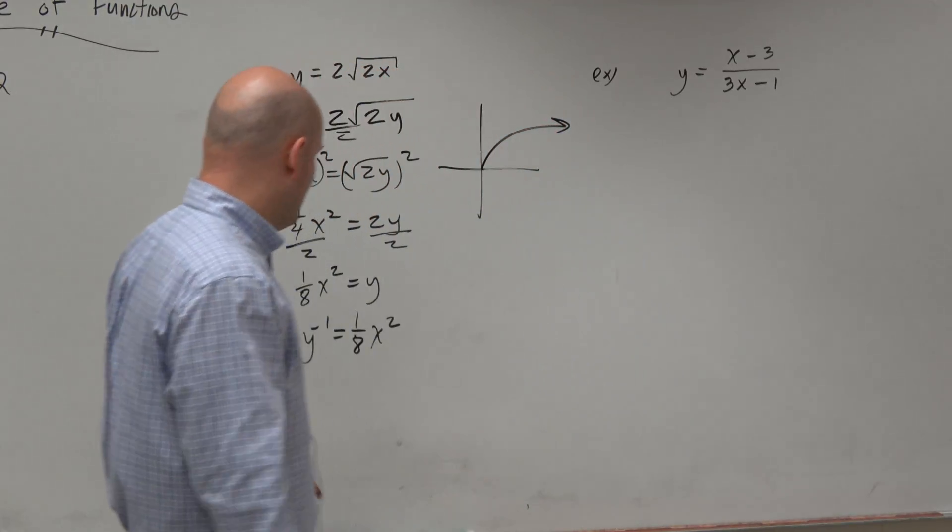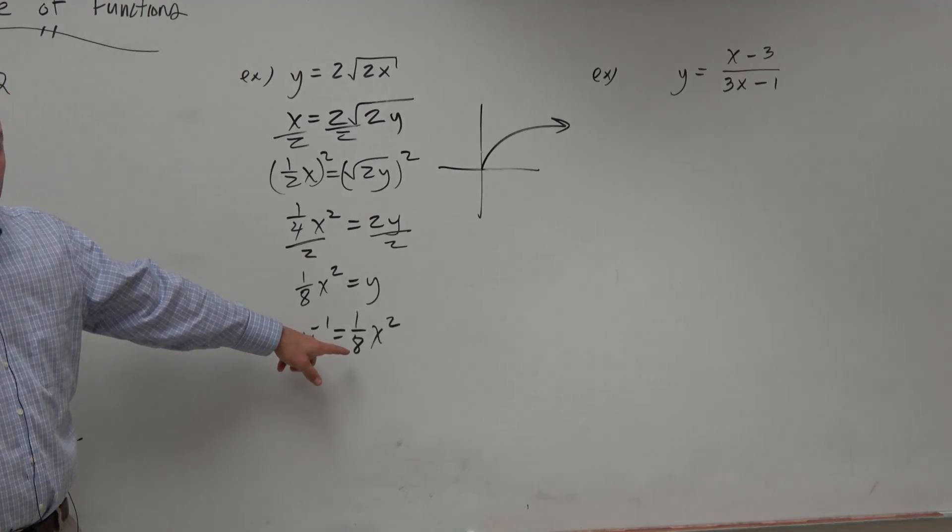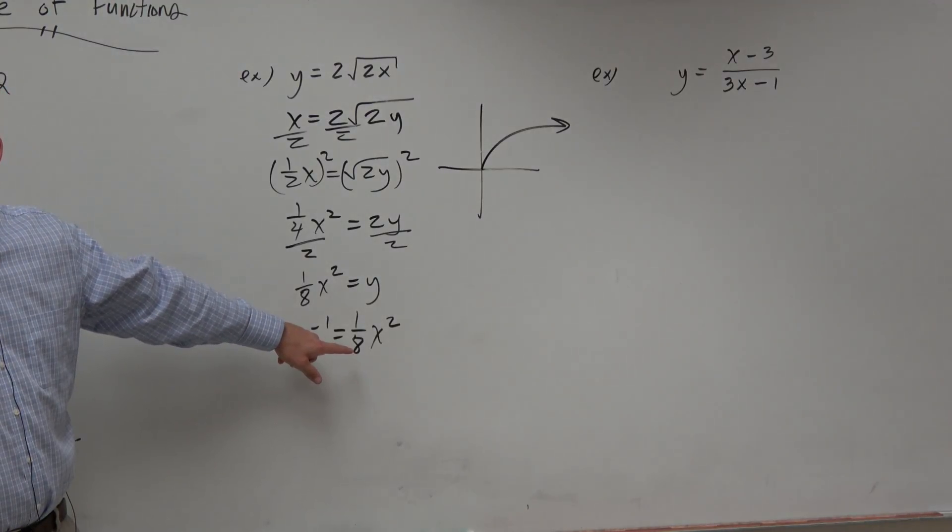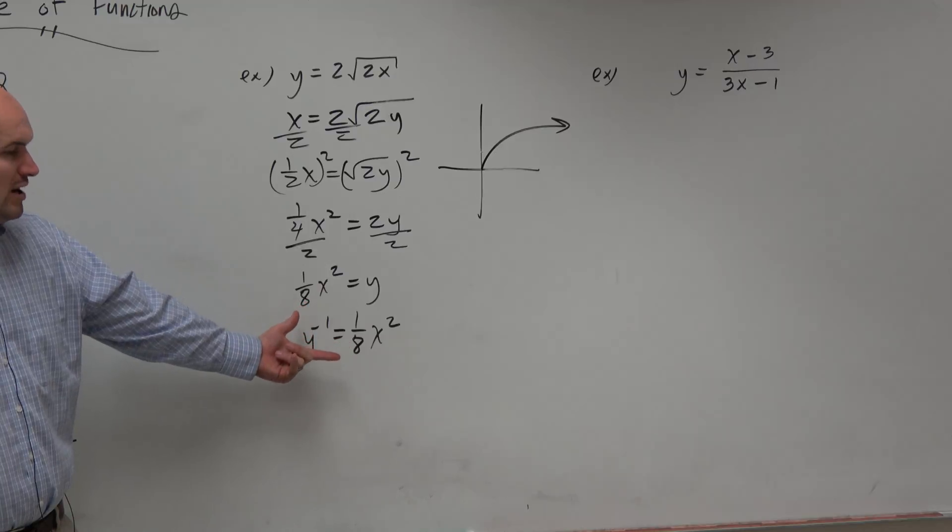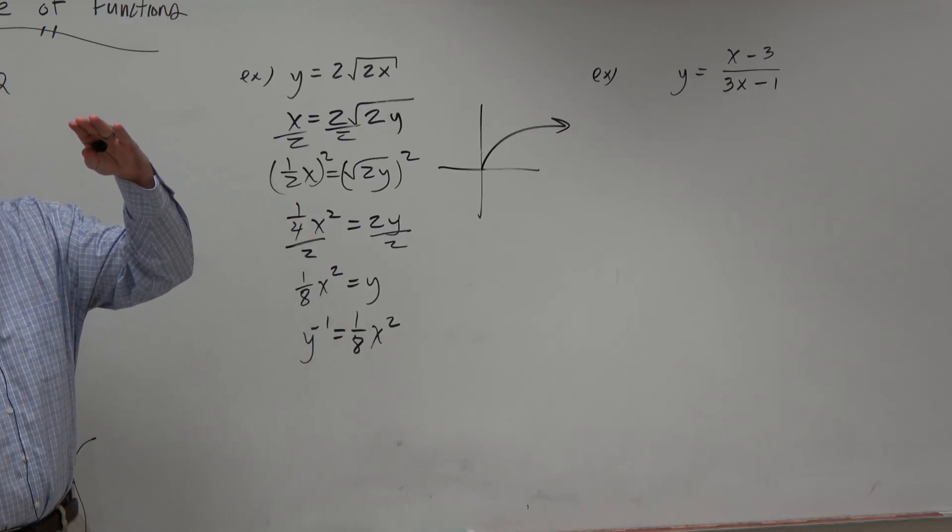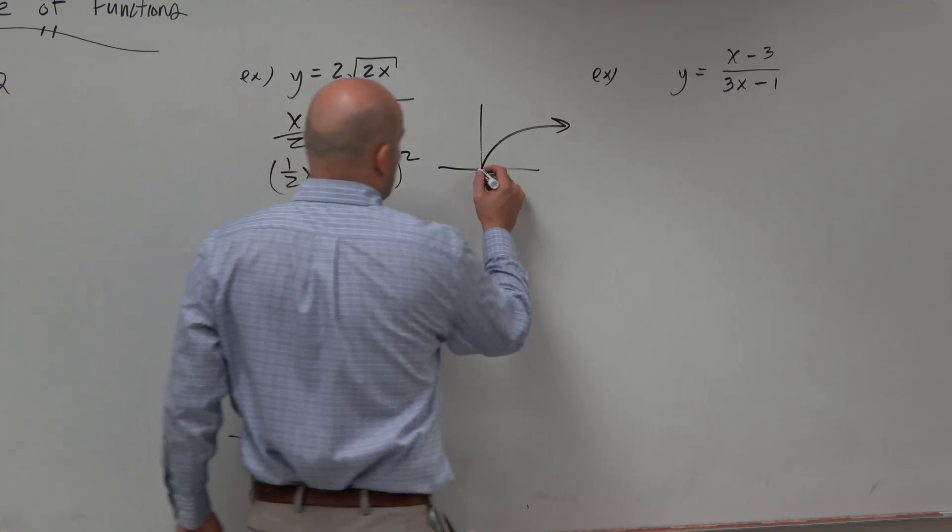Then we go ahead and find the inverse. Do we kind of have an idea of what this graph looks like? The 1 eighth? Yes? I mean, it's basically a quadratic, but with a vertical compression of 1 eighth. So that graph probably looks like that.